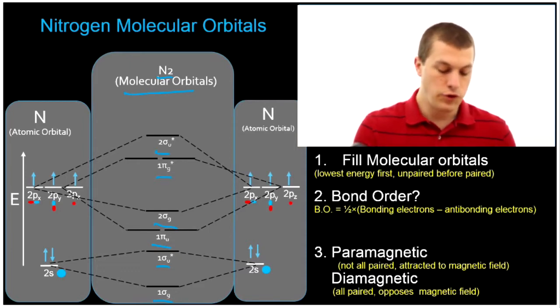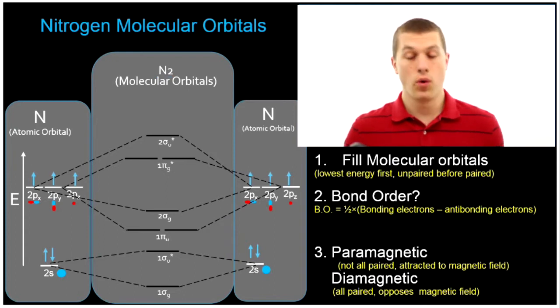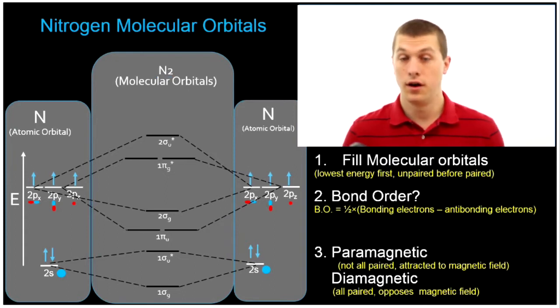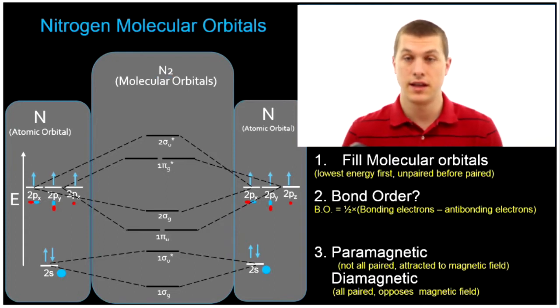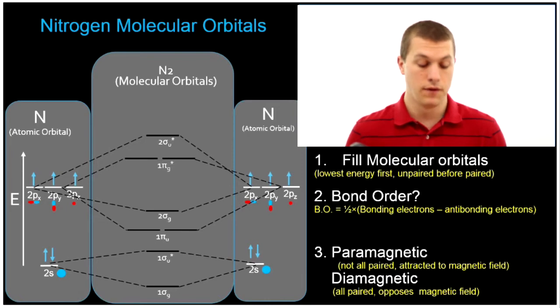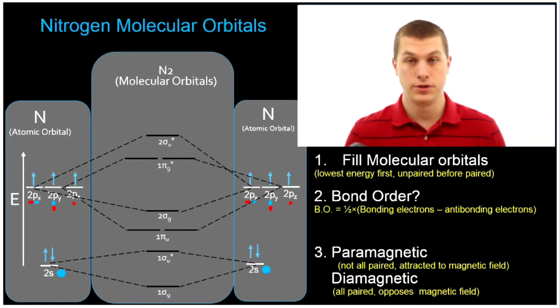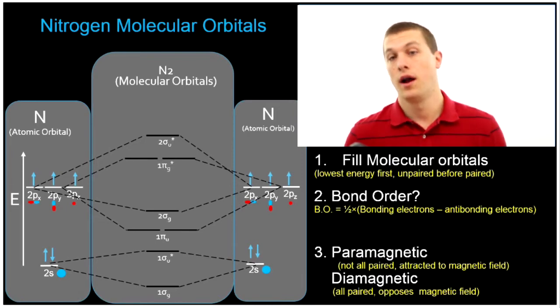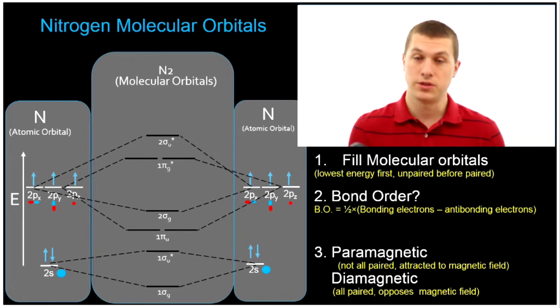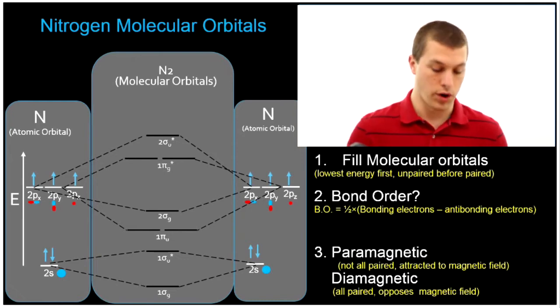So if you memorize that order of molecular orbitals, then you can easily fill in that diagram for B2, C2, and N2. I'm going to do a separate video on oxygen and fluorine, which have a slightly different order.